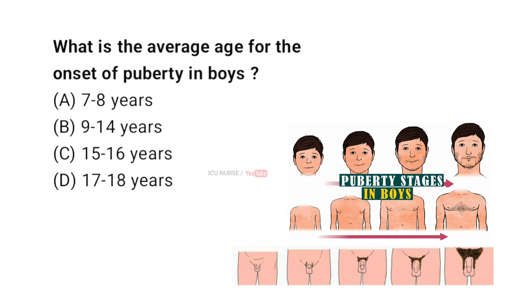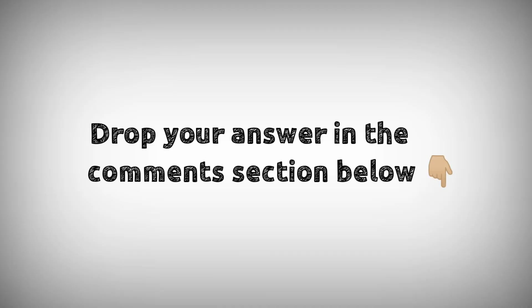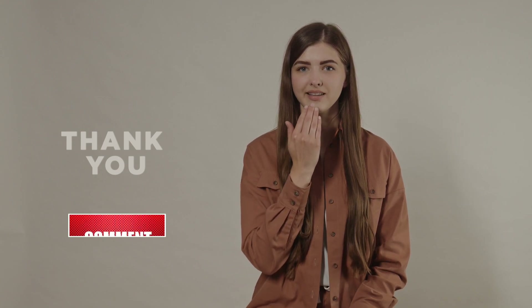What is the average age for the onset of puberty in boys? A: 7 to 8 years, B: 9 to 14 years, C: 15 to 16 years, D: 17 to 18 years. Drop your answers in the comment section below. For downloading PDF content and for latest updates, follow our Telegram channel — the link is in the description below. If you like this video, don't forget to hit that like button. Thanks for watching.